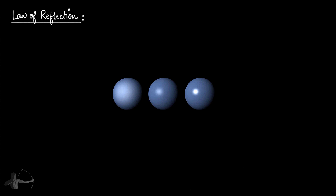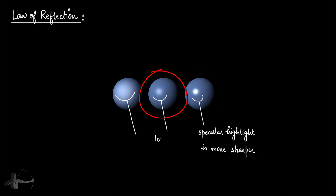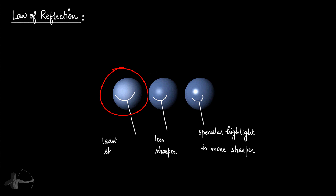Looking at some materials that exhibit specular reflection, we see that the specular highlights of different materials are very different. The specular highlight of one material is sharper, for another it is less sharp, and for a third it is least sharp.